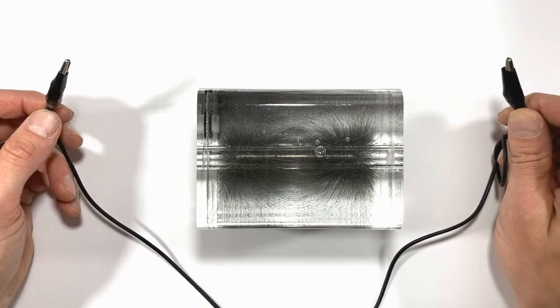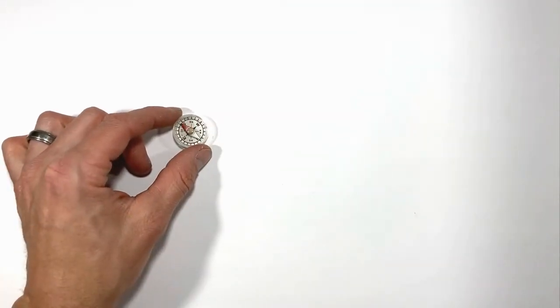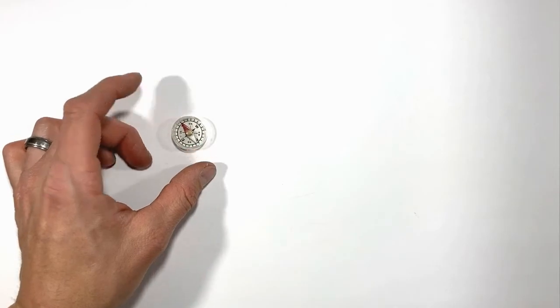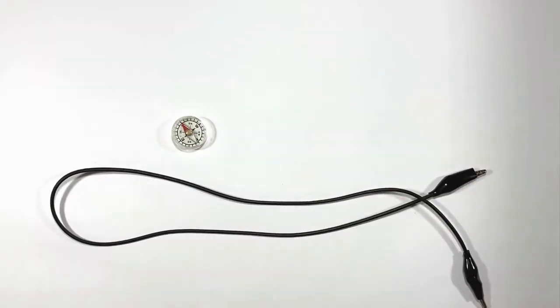You can see here I have a compass and the compass needle is pointing north, or what it thinks is magnetic north. Now if I take a wire and I hold that wire close to the compass, the compass doesn't change the direction which is pointed.